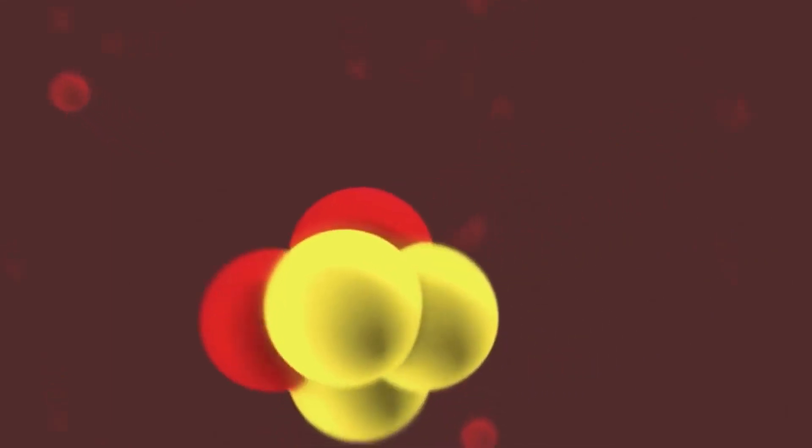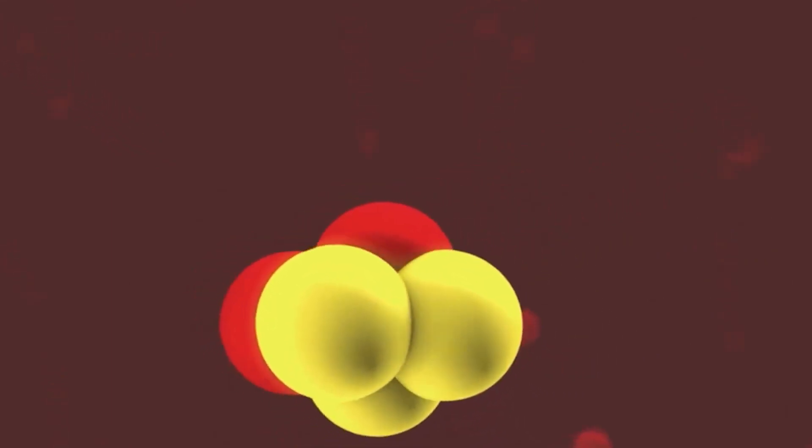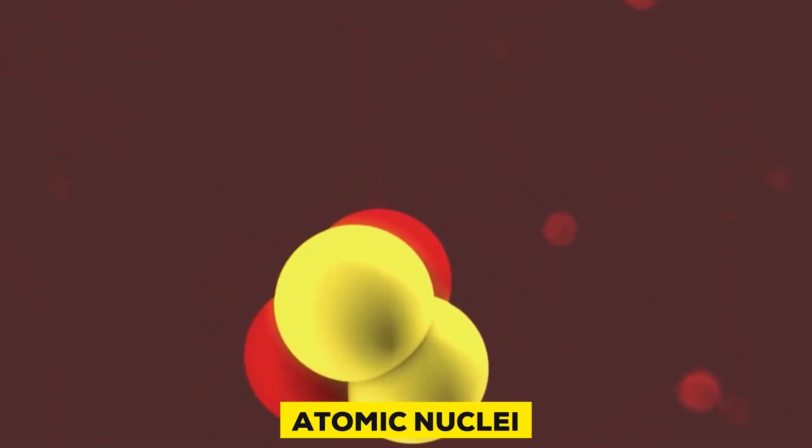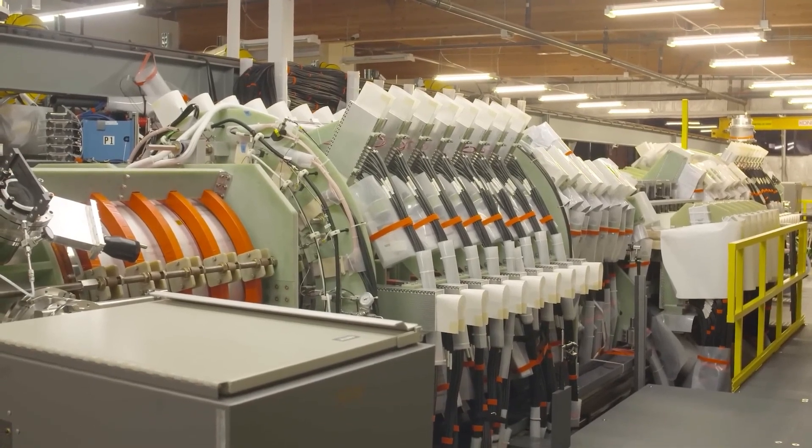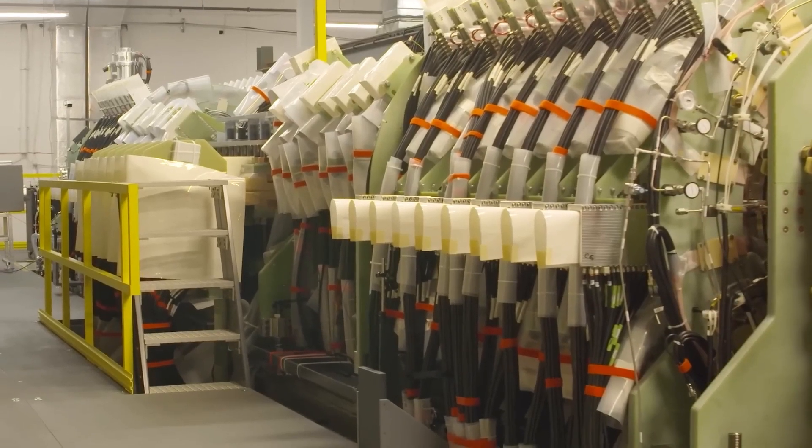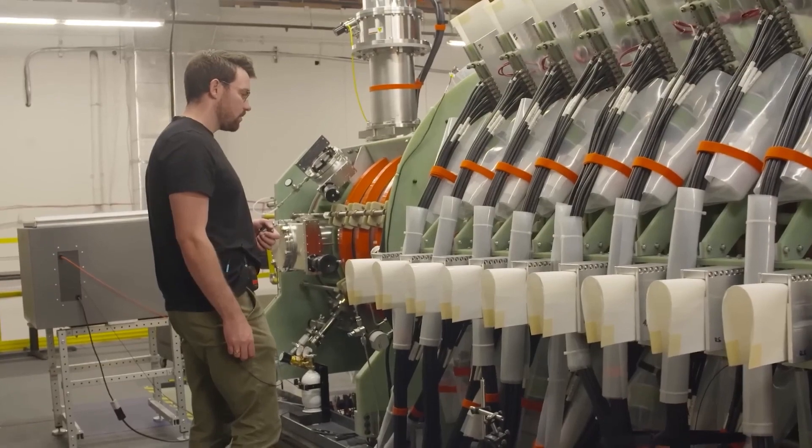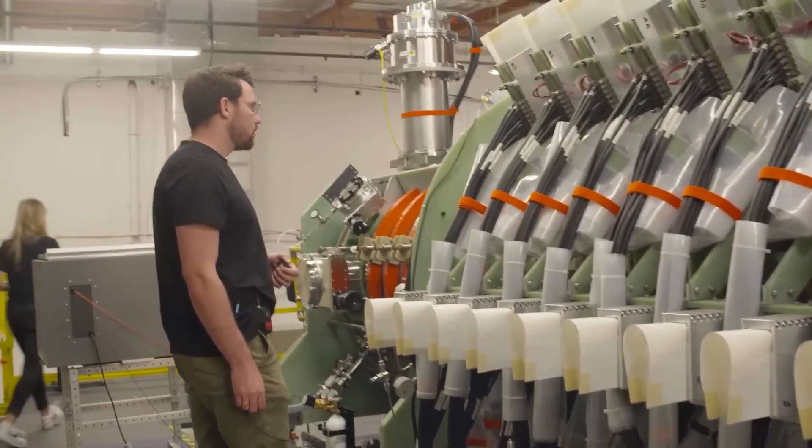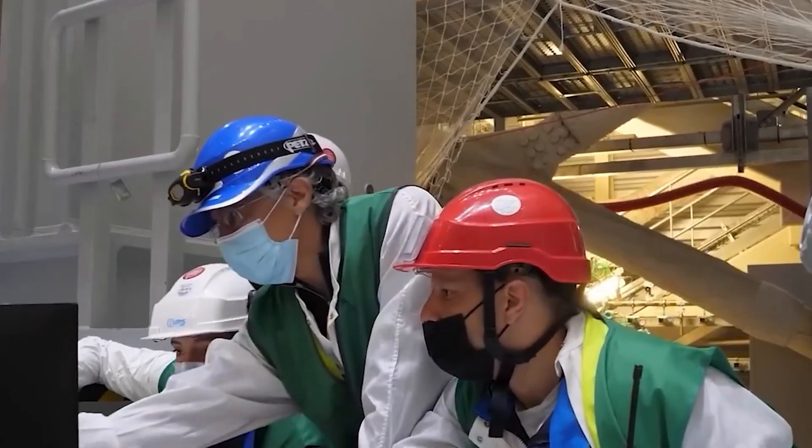The sun and stars get their energy from nuclear fusion. It takes place when atomic nuclei combine to create heavier elements, releasing enormous quantities of energy in the process. For scientists, the problem has been to manage and sustainably reproduce this process on Earth.